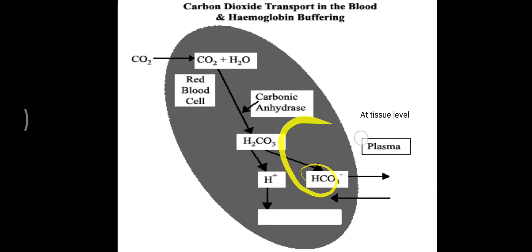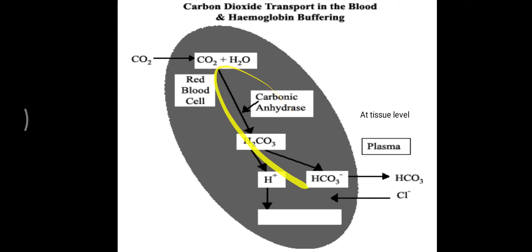When HCO3- goes outside the red blood cell, one negative charge leaves, so equilibrium must be maintained. Therefore, one chloride ion enters inside the red blood cell — this is called the chloride shift, which is also asked in exams and vivas in relation to acid-base balance. Chloride enters to maintain the charge of the red blood cell.